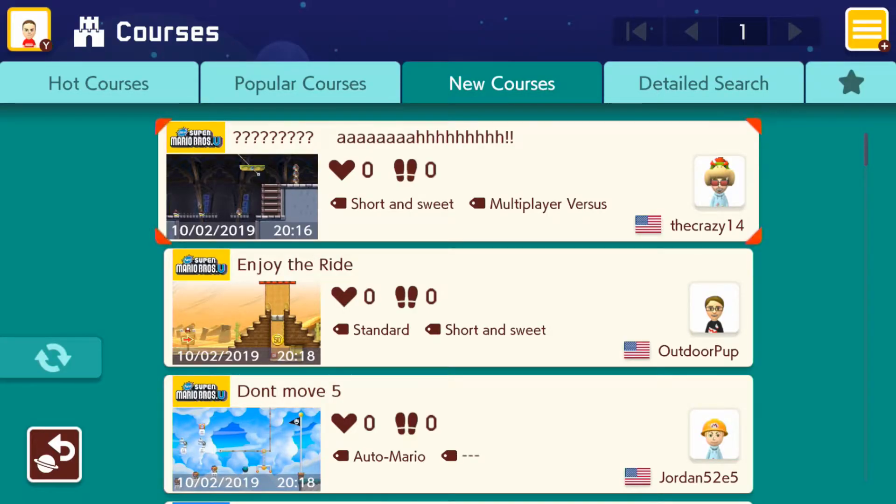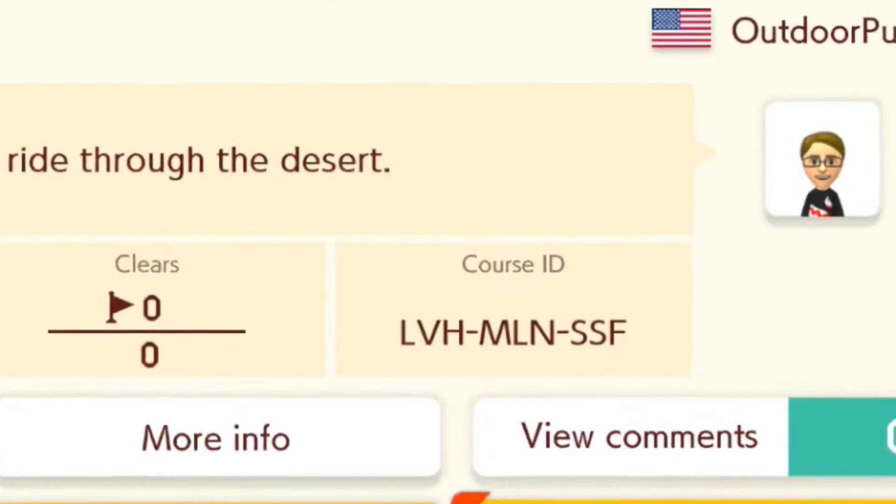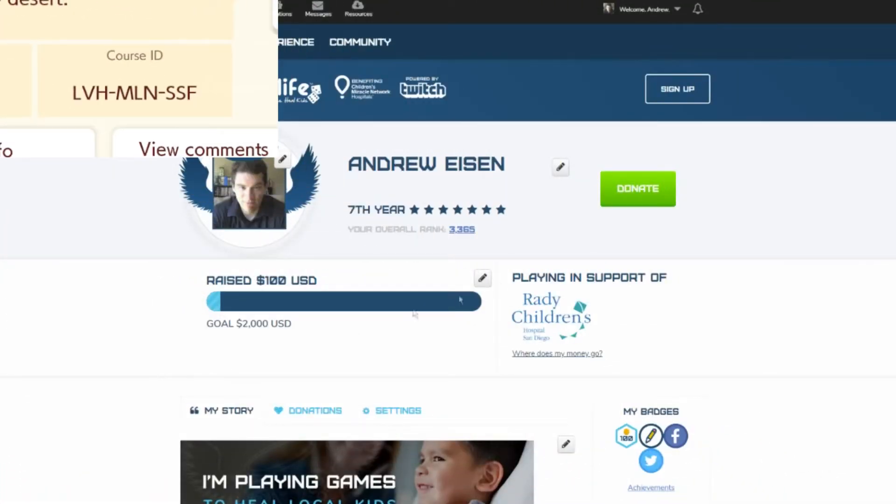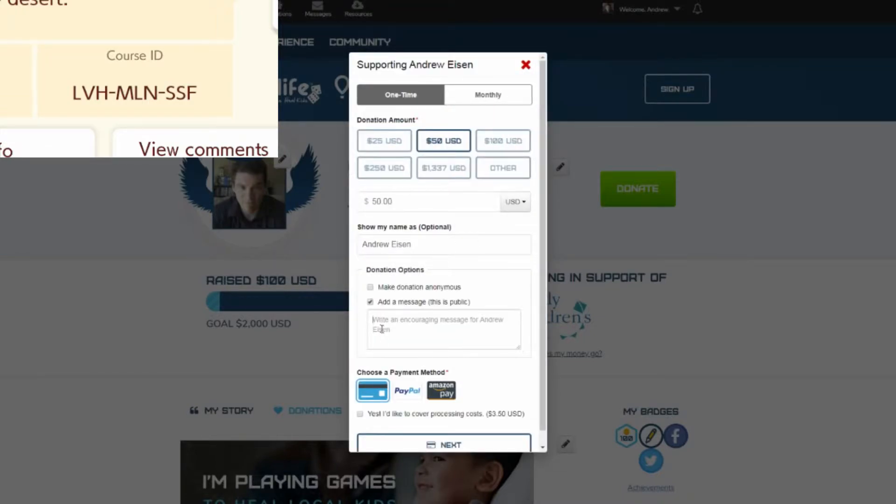This year I'll be playing your Super Mario Maker 2 courses. For every individual donation of $10 or more, I will play a Super Mario Maker 2 level of your choosing during the stream. It could be one you created, or a favorite from the wider Mario Maker community. When you make a donation, simply type the 12-digit course ID in the message section of the donation form and I'll play your level to completion,